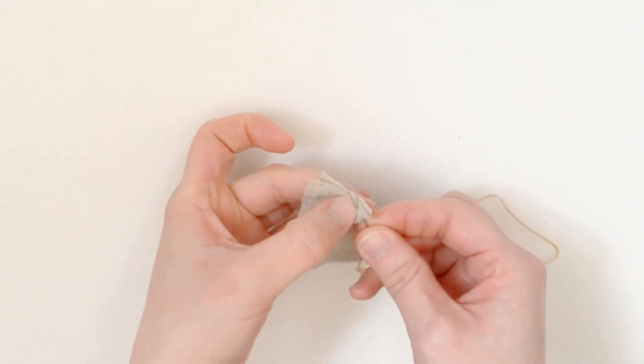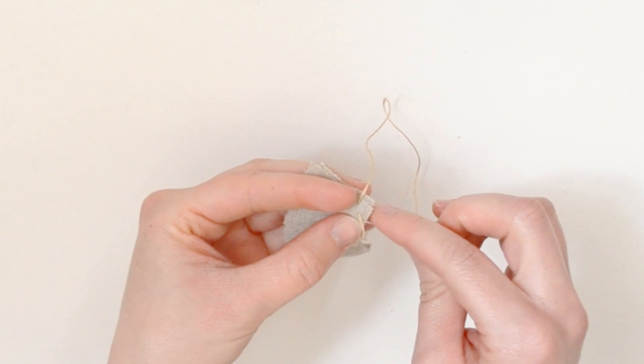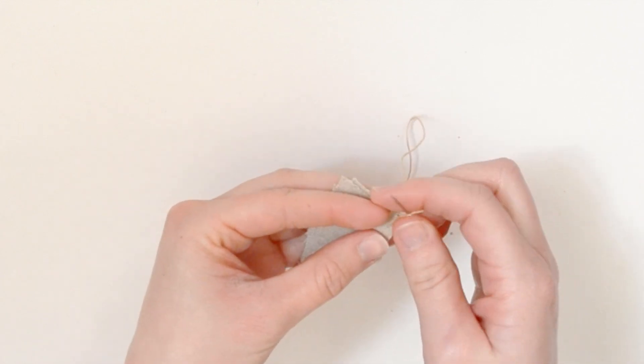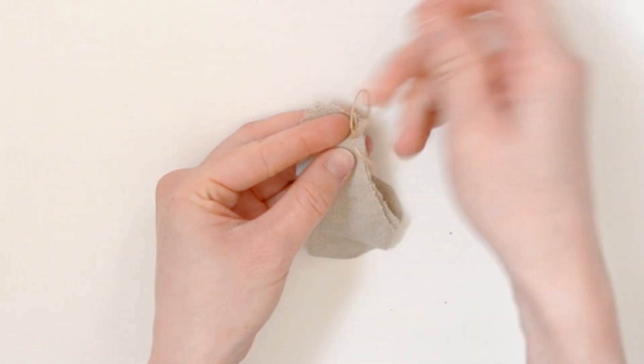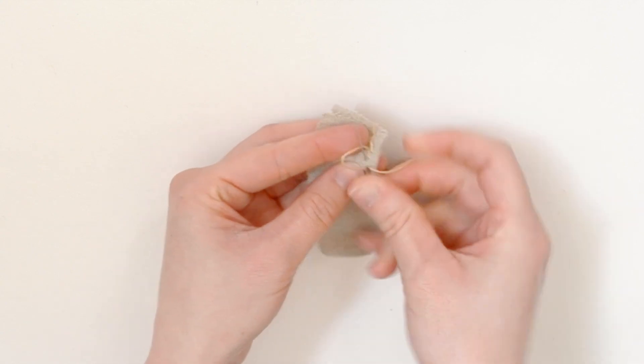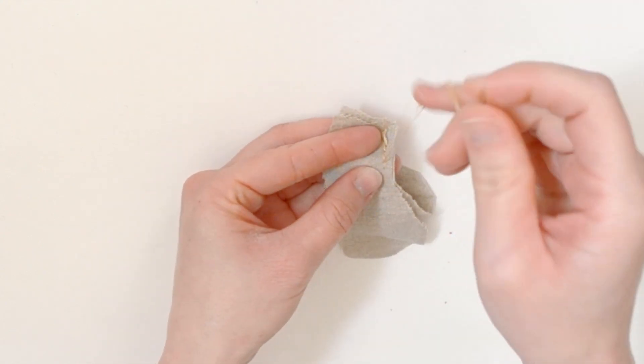Now begin with your two stem pieces. Hold them with the right sides or the outsides together. The linen I'm using doesn't have a right or wrong side, so you can't see the difference. You can also pin your pieces together at this point.